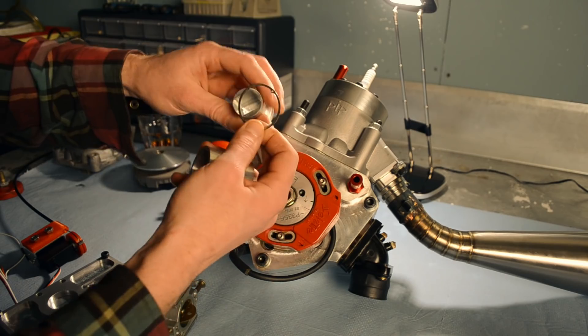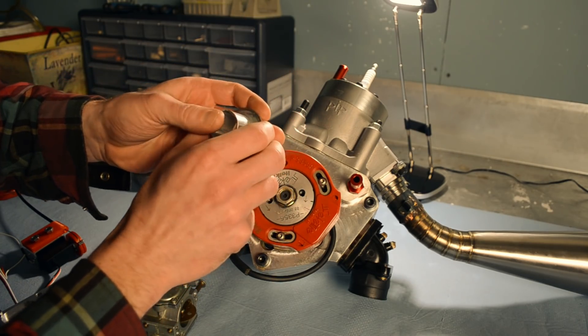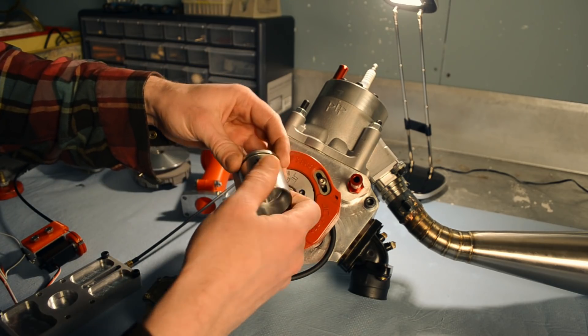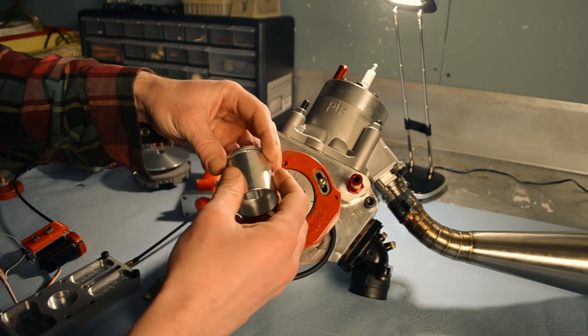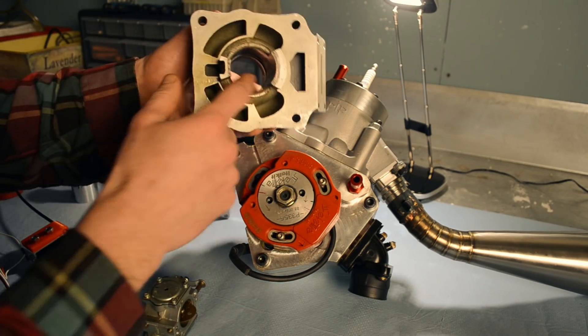There's a hole in the ring there and there's a corresponding pin in the top ring land, or the ring land roof, so that it can't expand too much and snag on that giant exhaust port.